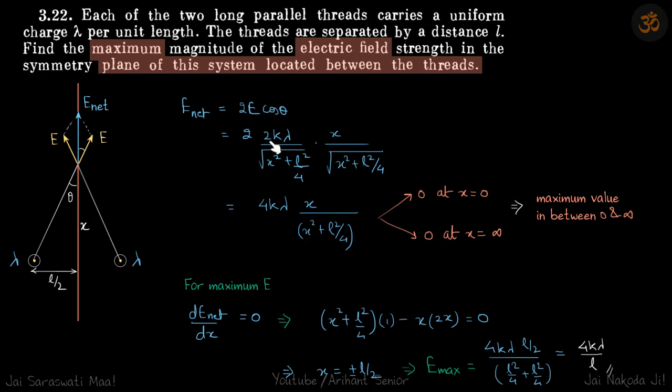And E is 2k lambda by r. This is r, which is again root of x squared plus l squared by 4. This is the net field at a point at a distance x from the line joining the two wires.